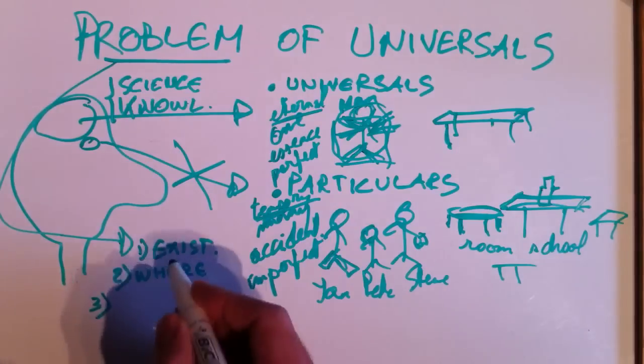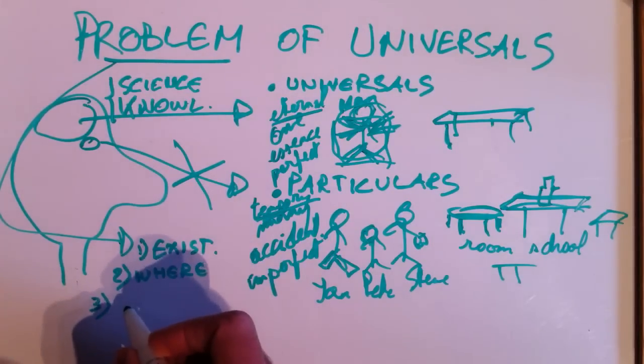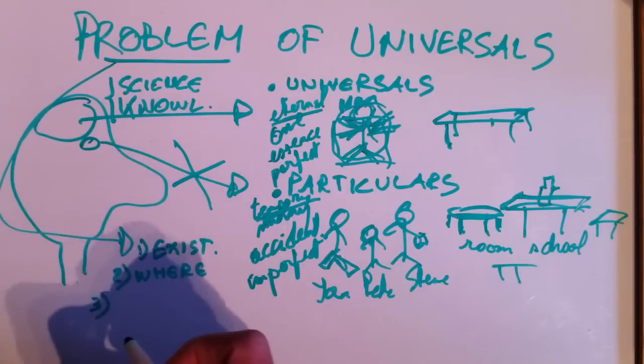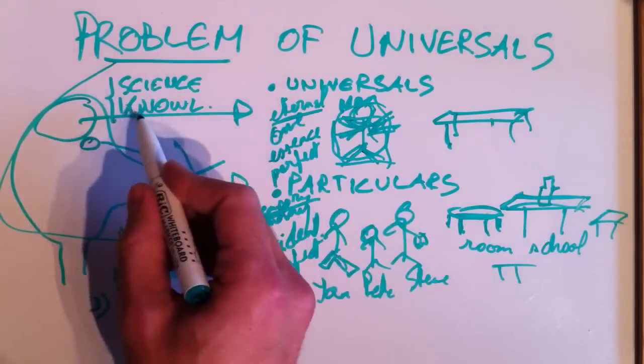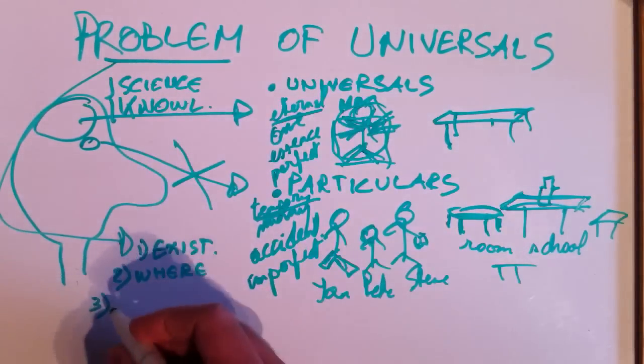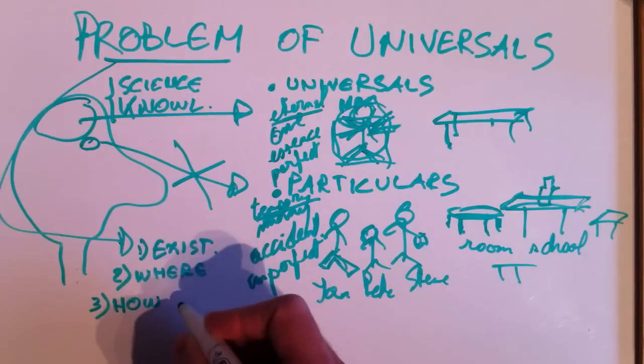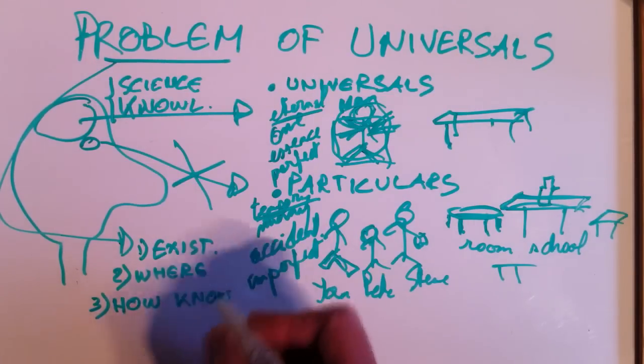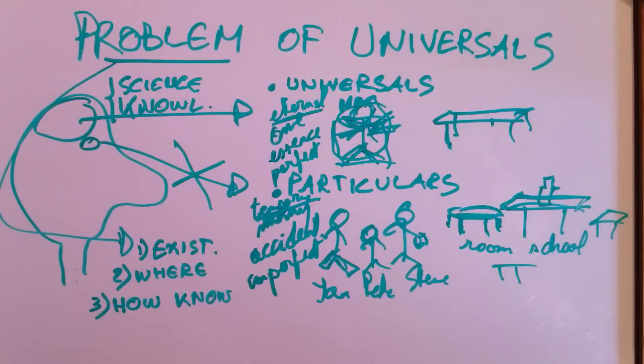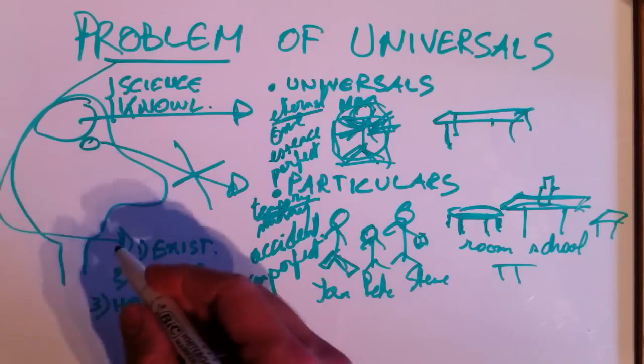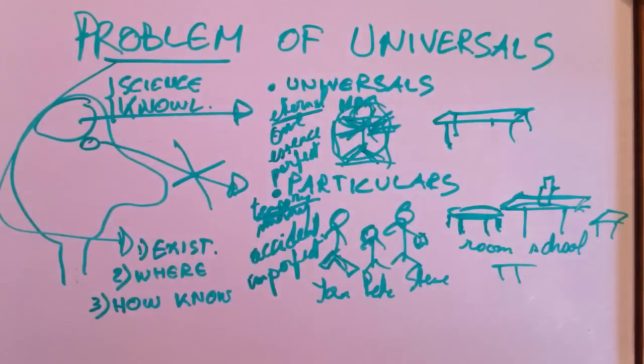And then a third question, also if they exist, one could still wonder how we can know them. How can we get to know universals? Because knowledge is about universals, but how do we acquire knowledge of universals? Okay, so these are the fundamental problems with universals, and in the next lessons I will talk a little bit about Plato's and Aristotle's solutions to these problems.